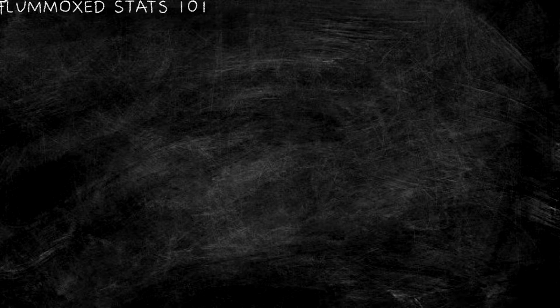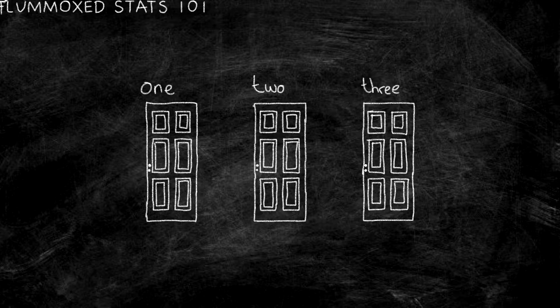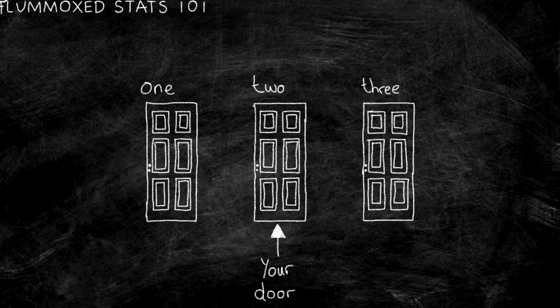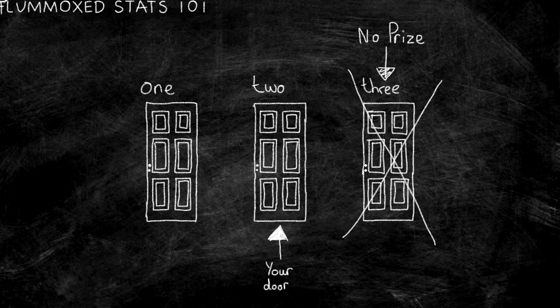Monty Hall asks you to choose one of three doors. One of the doors hides a prize and the other two will have nothing. You say out loud which door you want, but you don't open it right away. Monty then opens one of the other two doors and there is no prize behind it. At this moment there are two closed doors, one of which you have picked. The prize is behind one of them, but you don't know which one.